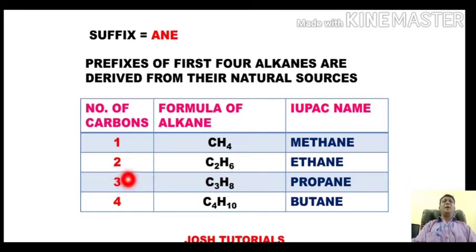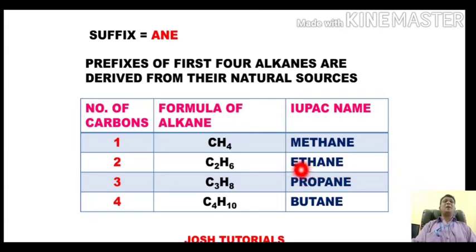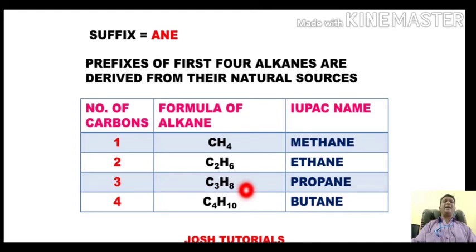When the number of carbons is two, the formula is C2H6 and we call this alkane ethane, where 'eth-' stands for consumable alcohol — it is a German word. For n=3, the formula is C3H8 and this straight-chain alkane is called propane, where the prefix 'prop-' is taken from propionic acid.